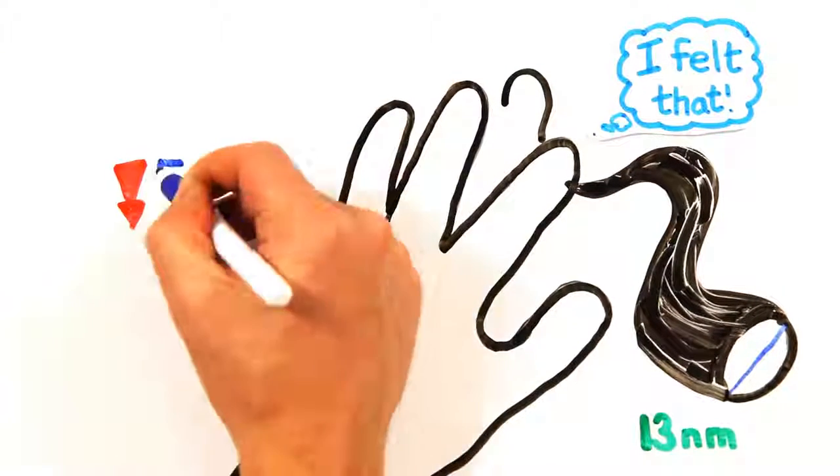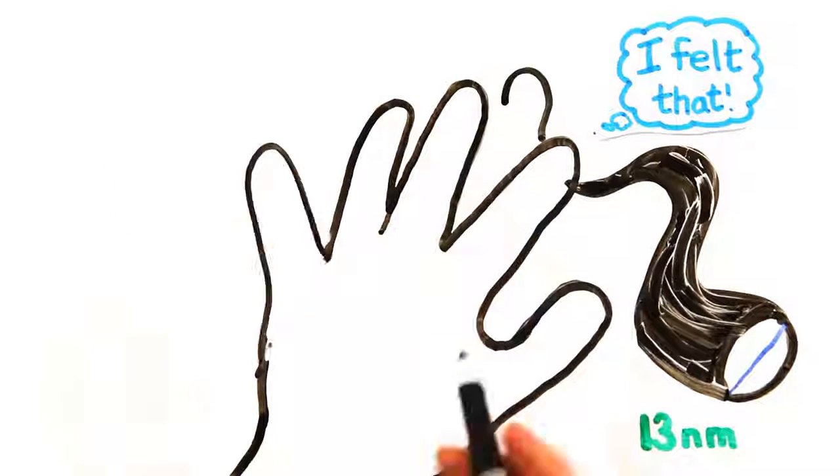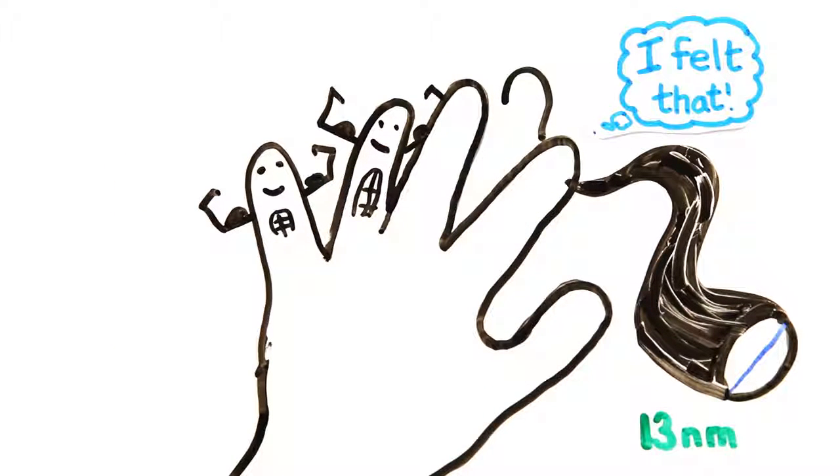And while you may not think much of your pinky finger, without it you would lose 50% of your hand's strength. Sure, the index and middle finger are essential to help pinch and grab with the thumb, but it's your ring and pinky finger that give your hand power.